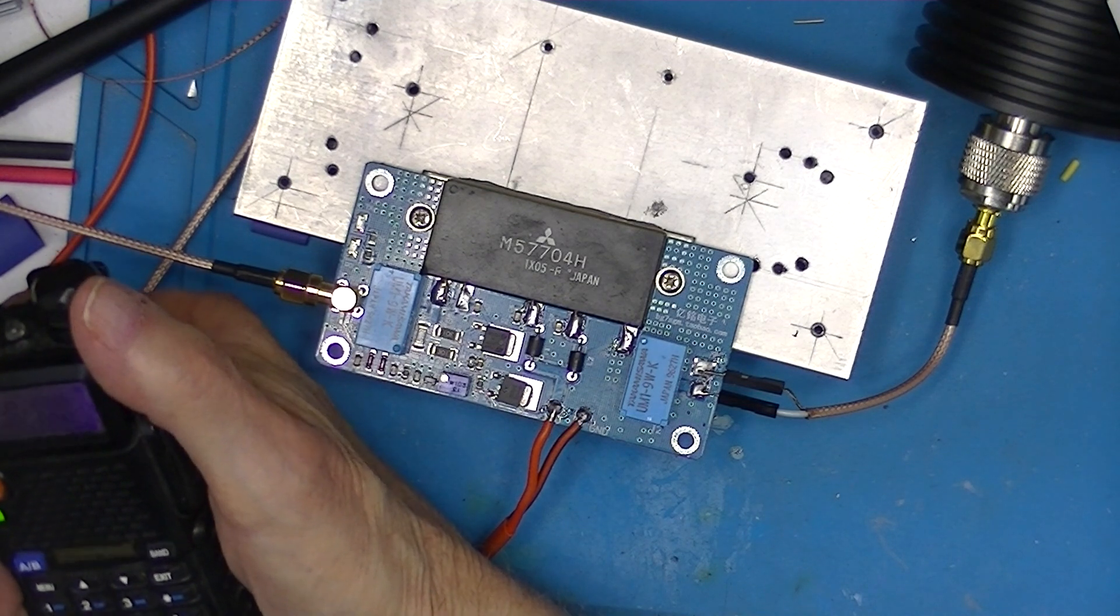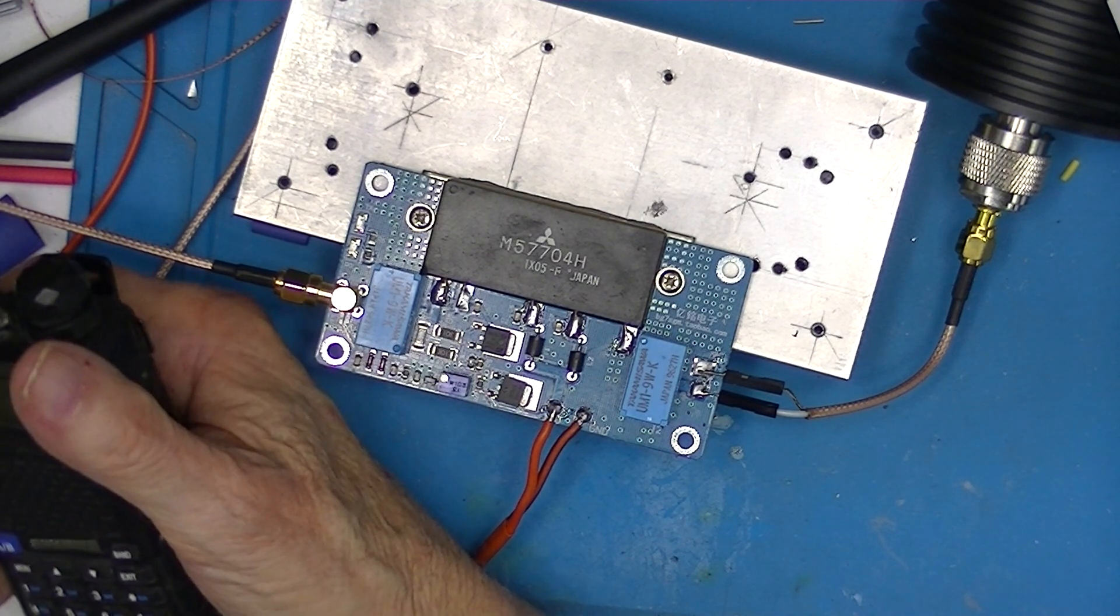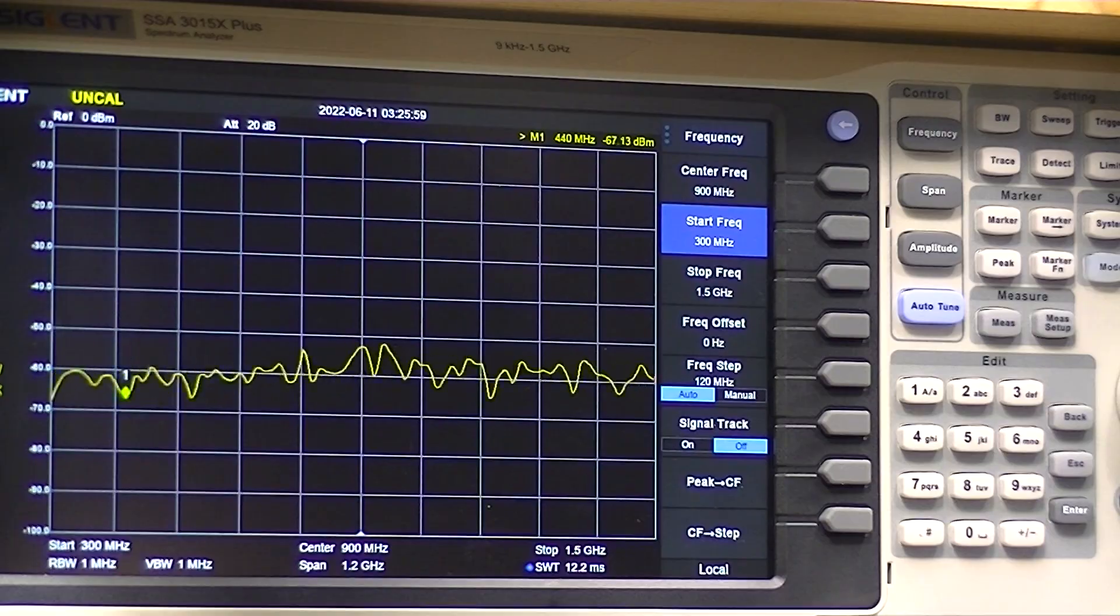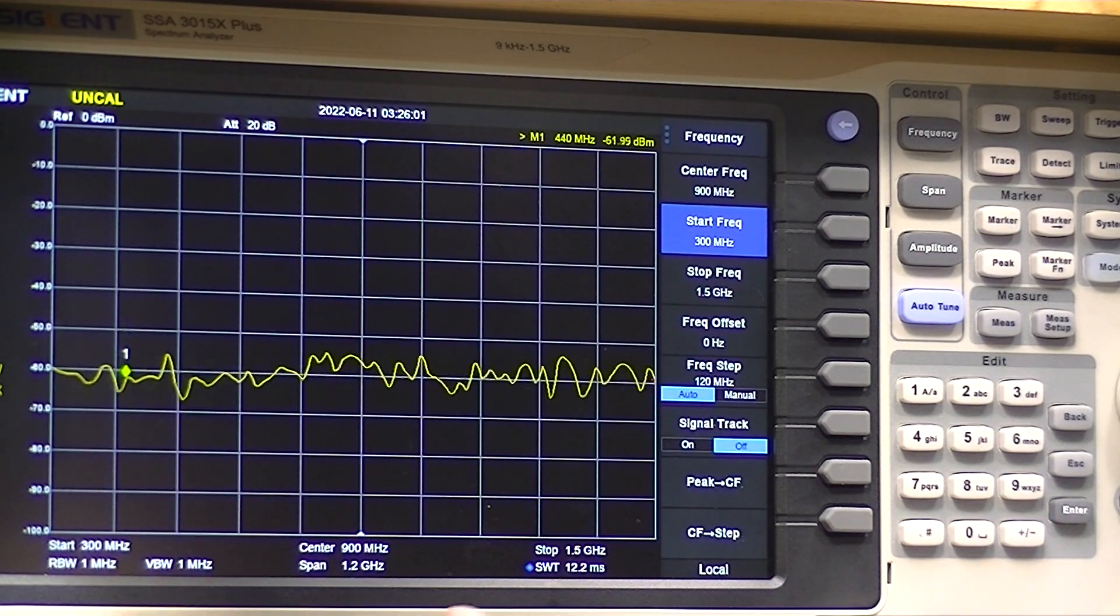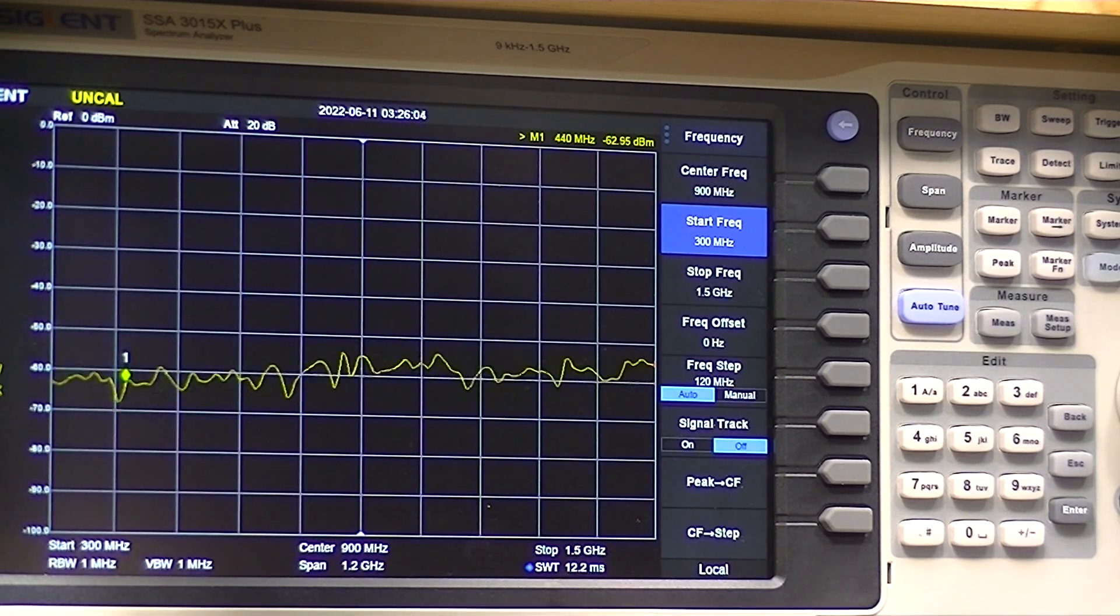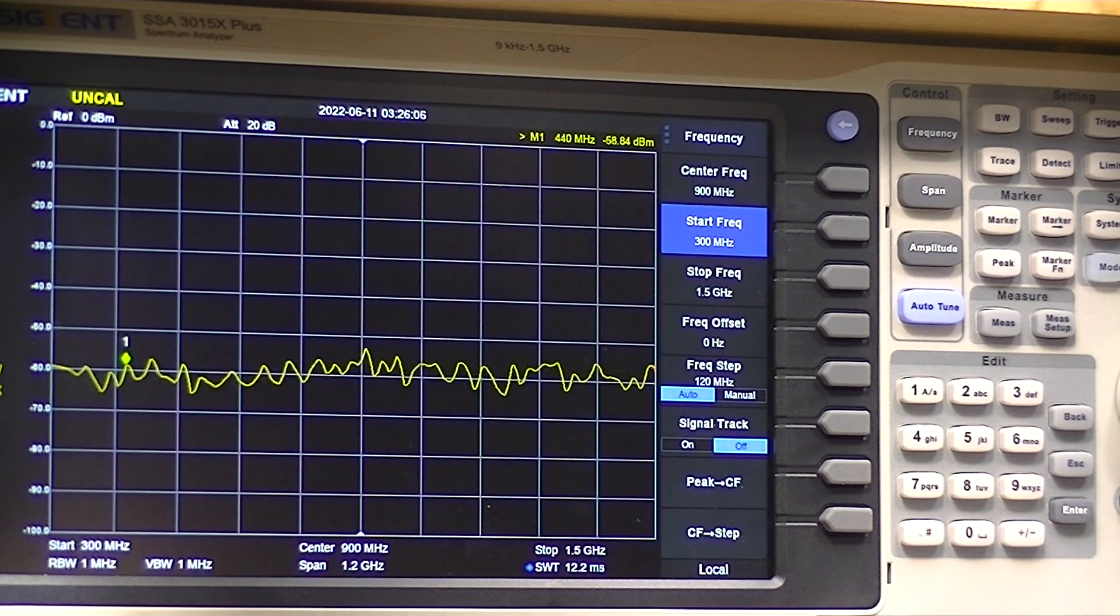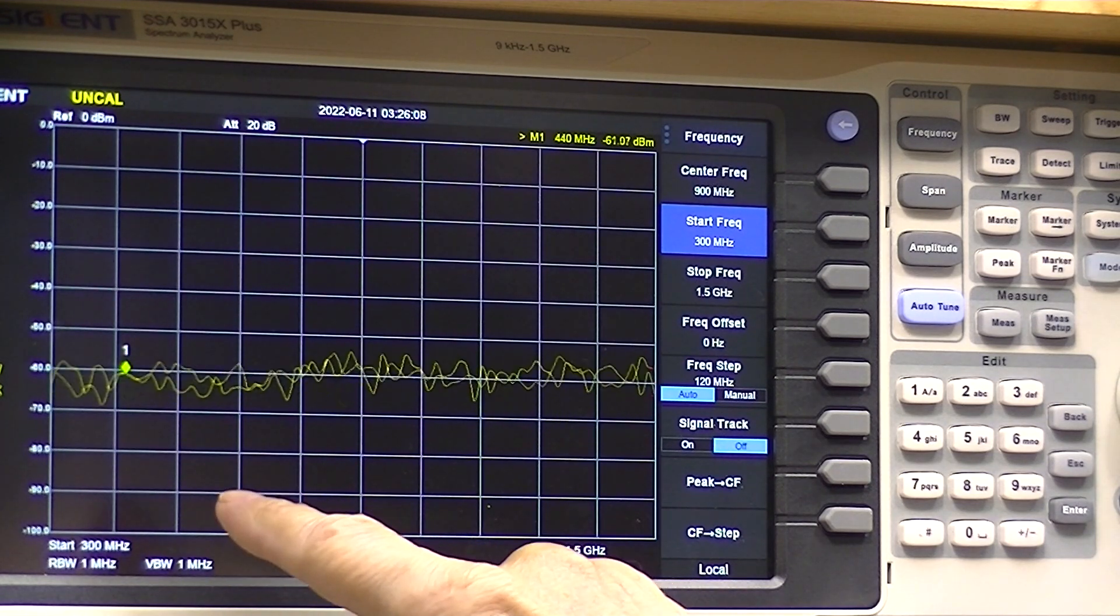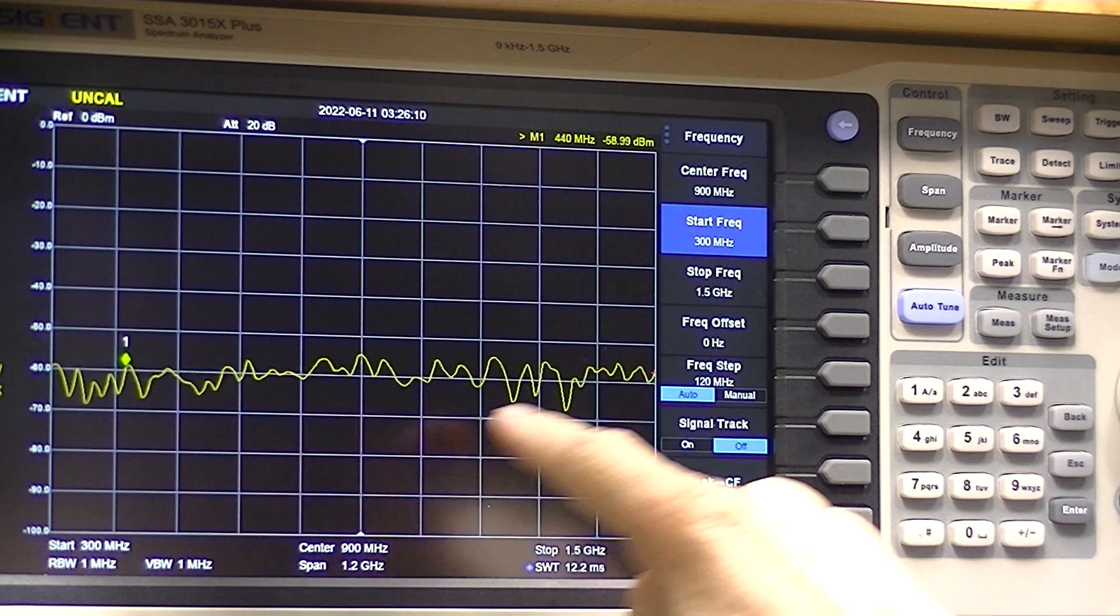And let's look at the spectrum analyzer. I've got a start of 300, a stop of 1.5 GHz. Noise floor is about minus 60.